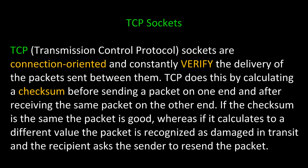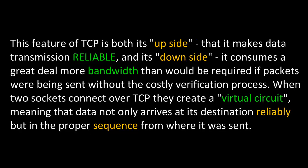TCP, or transmission control protocol sockets, are connection-oriented and constantly verify the delivery of the packets sent between them. TCP does this by calculating a checksum before sending a packet on one end and after receiving the same packet on the other end. If the checksum is the same, the packet is good. If it calculates to a different value, the packet is recognized as damaged in transit and the recipient asks the sender to resend the packet. This feature of TCP is both its upside — that it makes data transmission reliable — and its downside: it consumes a great deal more bandwidth than would be required if packets were being sent without the costly verification process.